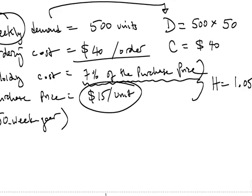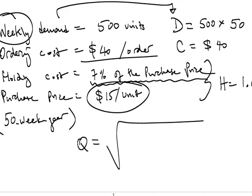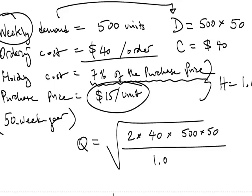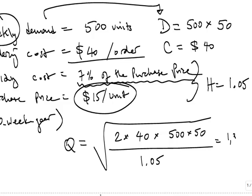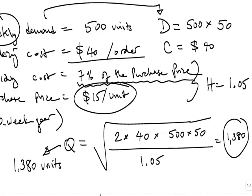Now we have all the key ingredients for our formula. The economic order quantity equals the square root of 2 times C ($40), times D (500 times 50), all divided by H ($1.05). Calculating that and taking the square root, we end up with 1,380 units. The interpretation is that each time the company places an order, it minimizes its total costs by ordering 1,380 units.